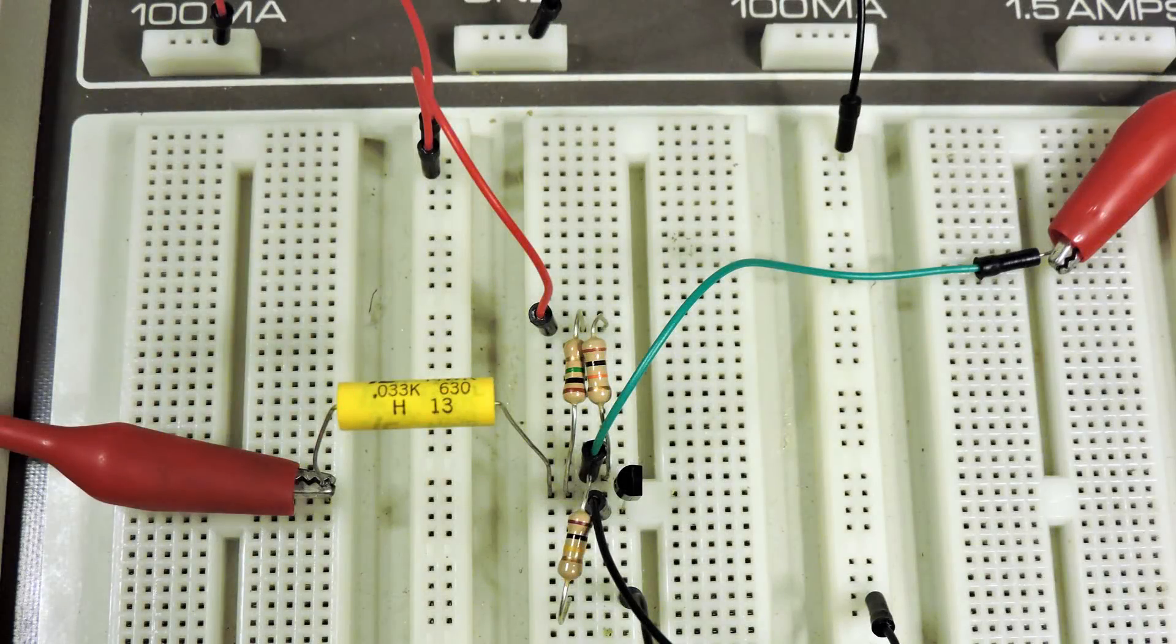If you're repairing an audio amplifier and you can't get a hold of the original transistor to replace, what you'd want to do is find a transistor that as close as possible matches the specs of the transistor you want to replace.